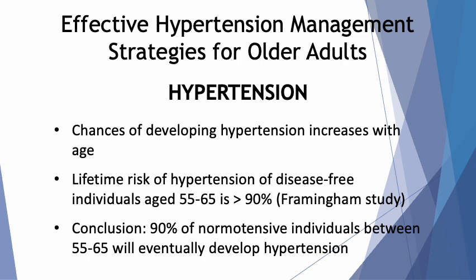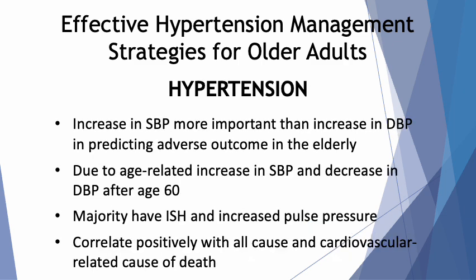Data from the Framingham Heart Study shows that the lifetime risk of individuals who are free from hypertension at age 55 to 65 is over 90%. That means over 90% of individuals between 55 to 65 who are normotensive would eventually develop hypertension. After the age of 50, an increase in systolic blood pressure is more important than an increase in diastolic blood pressure in predicting an adverse outcome.